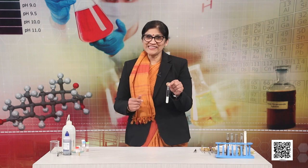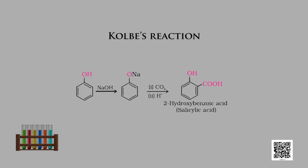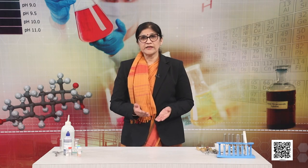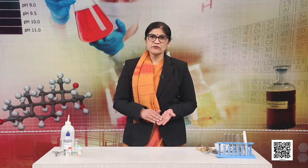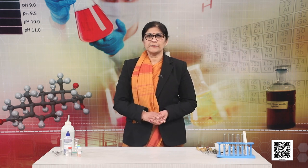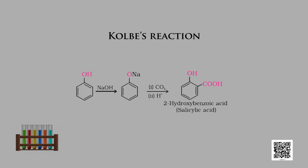The next reaction that phenols undergo is Kolbe's reaction. The phenoxide ion, generated by treating phenol with sodium hydroxide, is even more reactive than phenol towards electrophilic aromatic substitution. Hence, it undergoes electrophilic substitution with carbon dioxide, a weak electrophile, and orthohydroxybenzoic acid (salicylic acid) is formed as the main product.